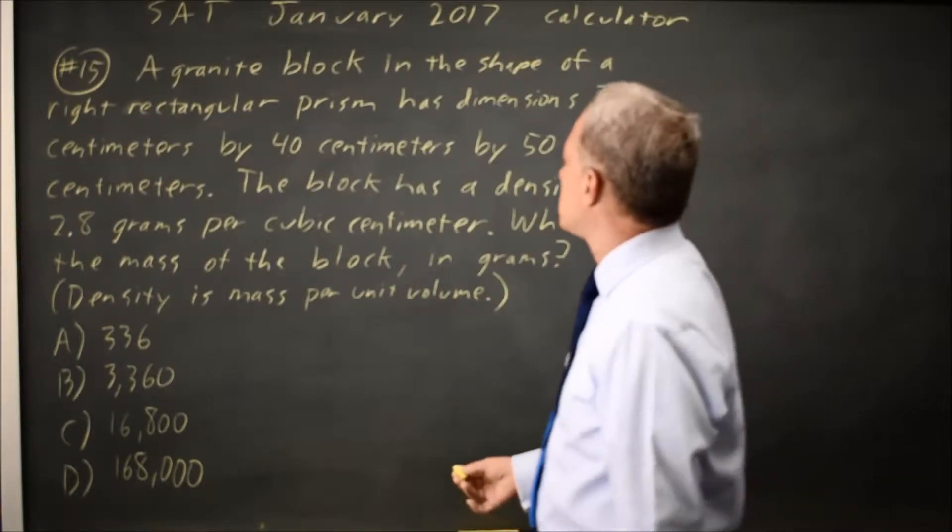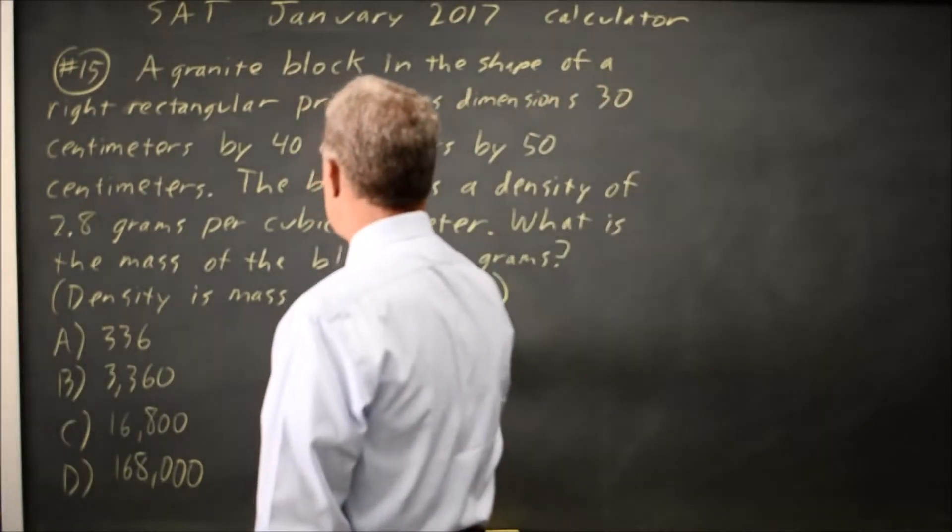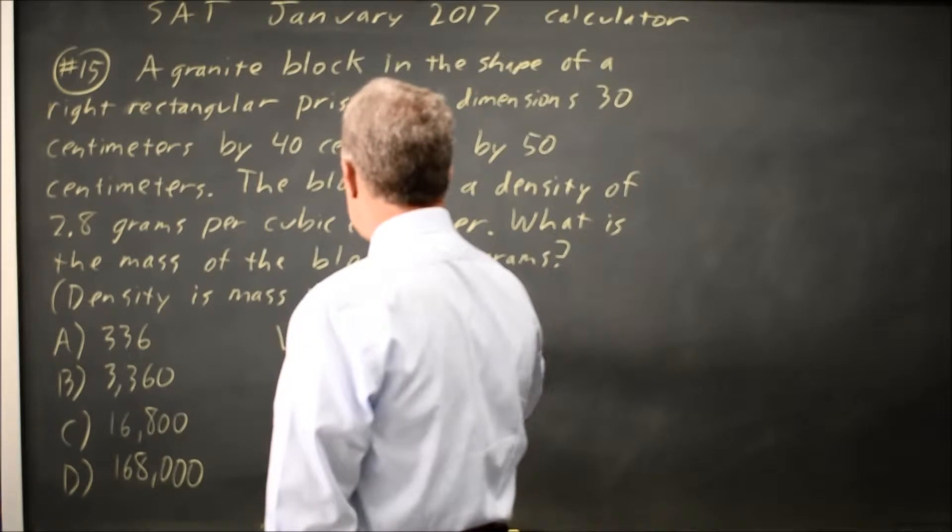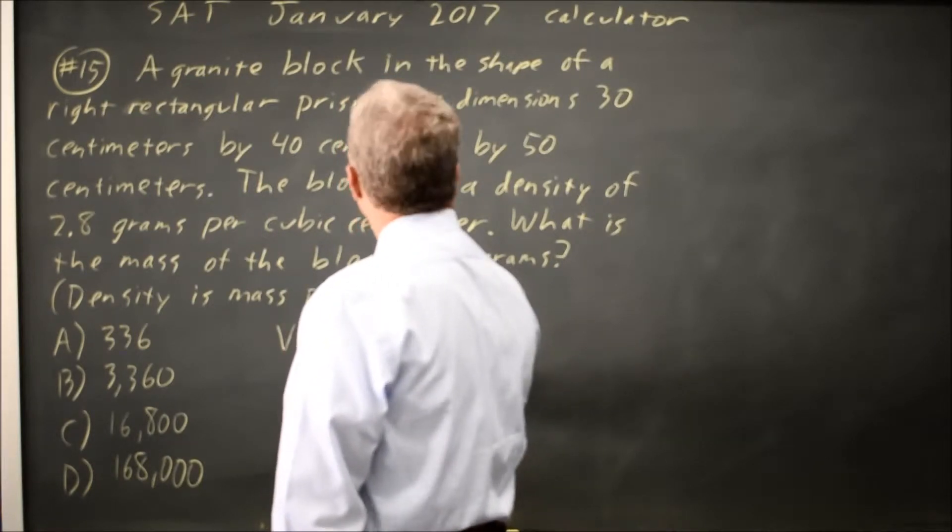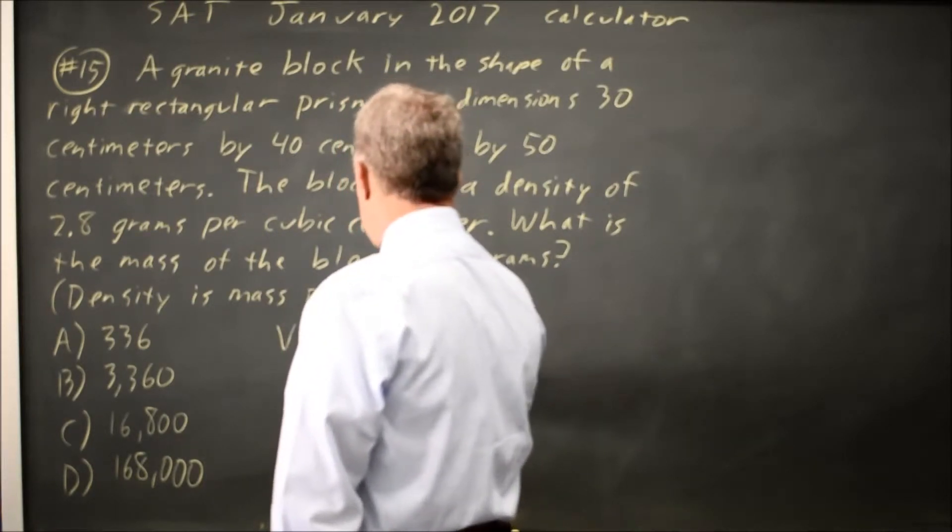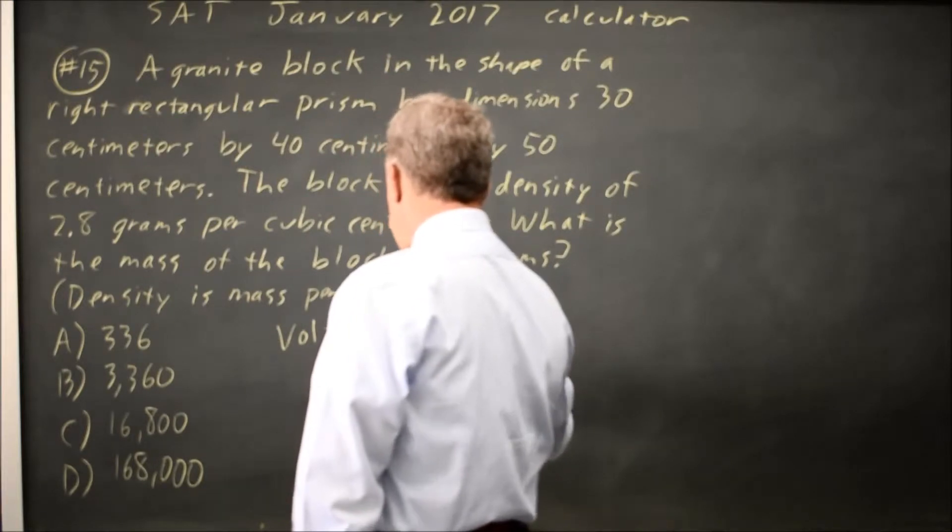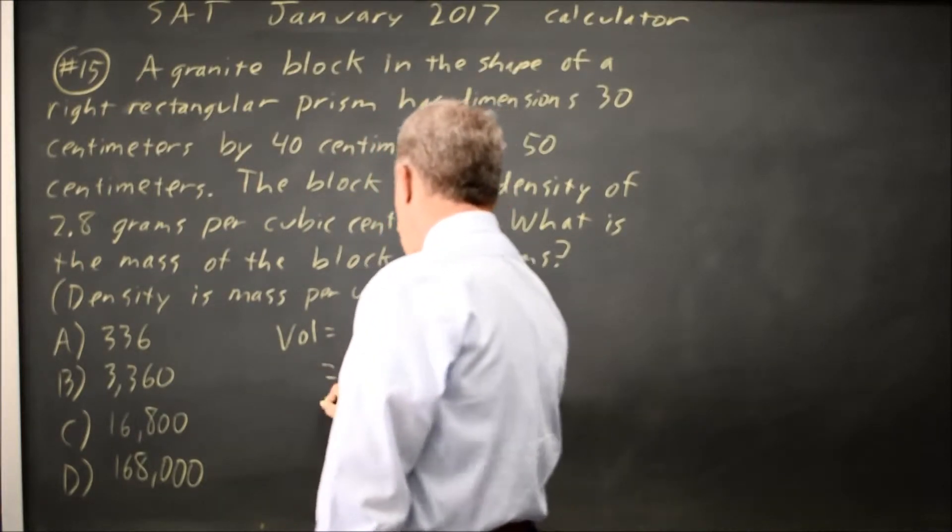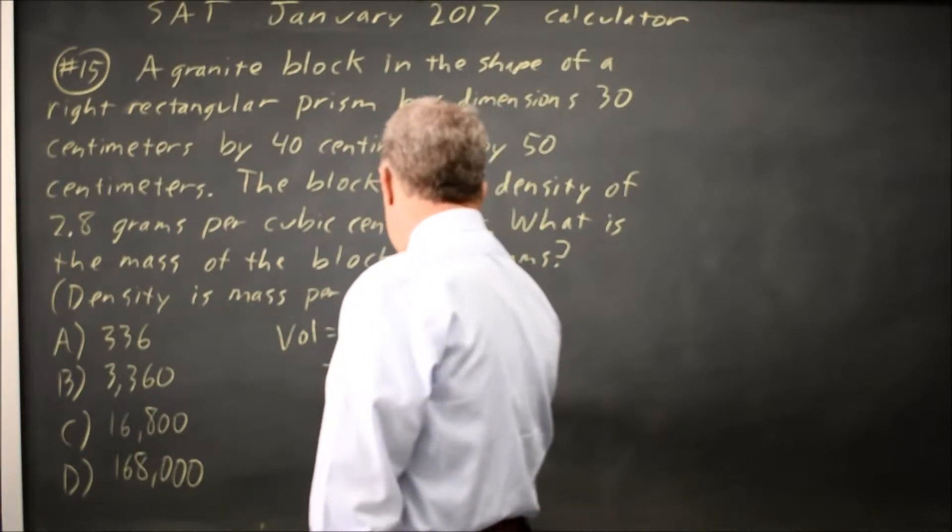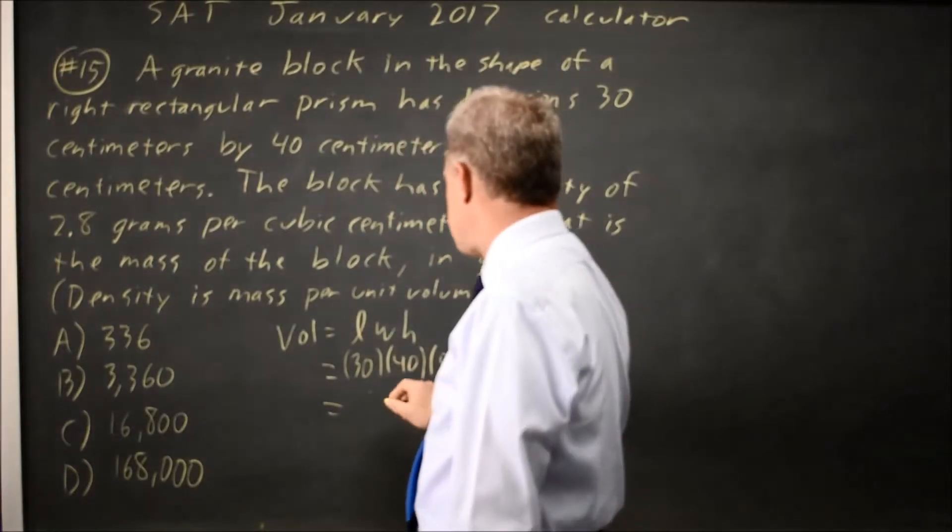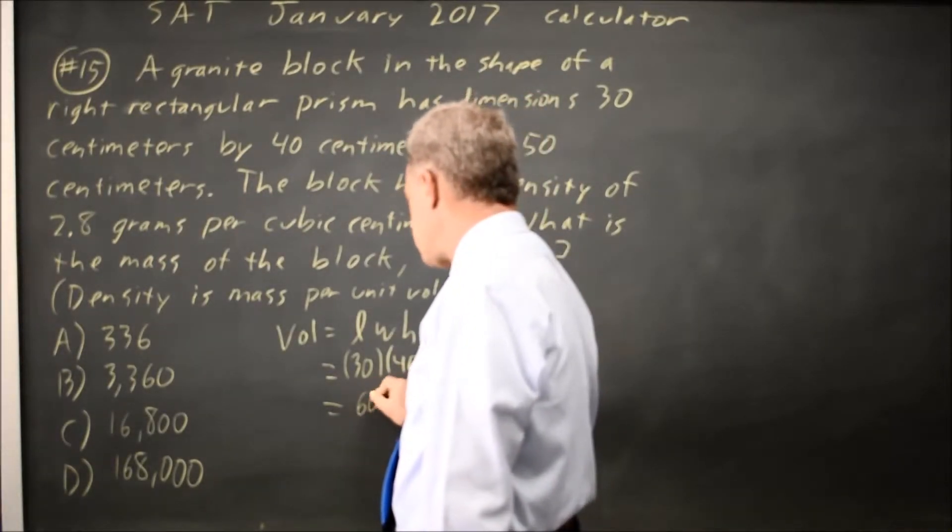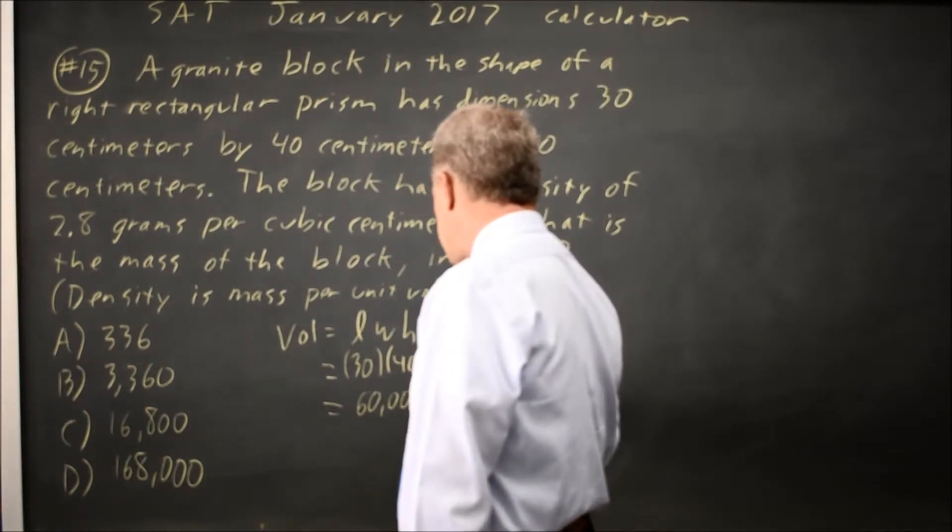And they ask for the mass. So the volume equals length times width times height, which is 30 times 40 times 50, which is 3 times 4 is 12 times 5 is 60, and with three more zeros is 60,000 cubic centimeters.